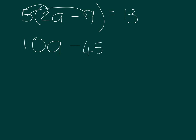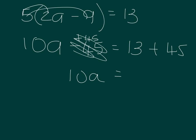Then we just carry on as usual. So we've got our 10a, we've got our negative 45. So we want to get rid of our negative 45, so we've got plus 45, and that becomes plus 45, and that gets rid of that.